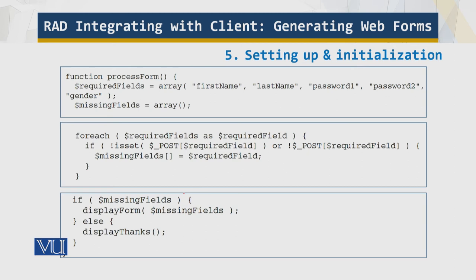Next comes the form handling function: process_form. This sets up an array of required field names and also initializes an array to hold the required fields that weren't filled in. The function loops through the required field names and looks for each one in the $_POST array. If the field name doesn't exist or its value is empty, the field name is added to the missing fields array. If missing fields were found, the function calls display_form, passing in the array of missing field names so the form can highlight the appropriate fields.